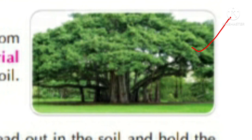Trees such as banyan have roots that grow downwards from the branches towards the ground. These are called aerial roots. These roots hang in the air and are not covered by soil.